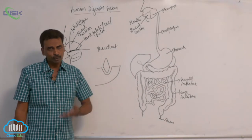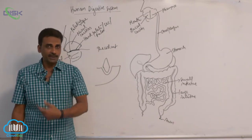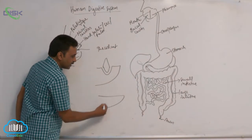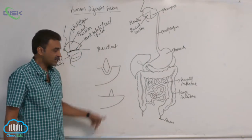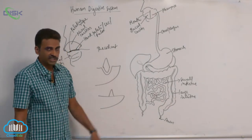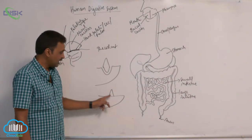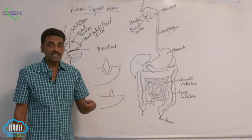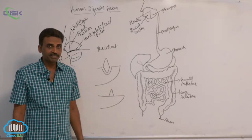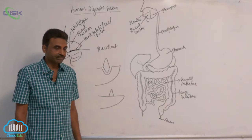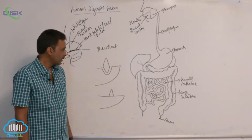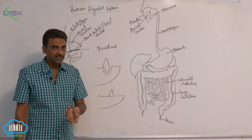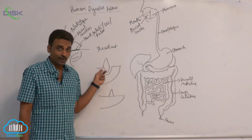In our ancestors — the fishes, amphibians, reptiles — the teeth are generally attached to the summit of the jaw. When teeth are present attached to the summit of the jaw, it is called acrodont dentition. Thecodont dentition is seen in mammals and also in crocodiles.